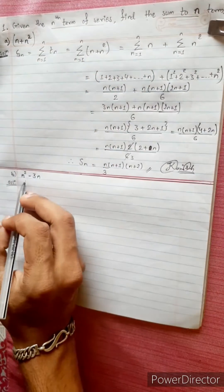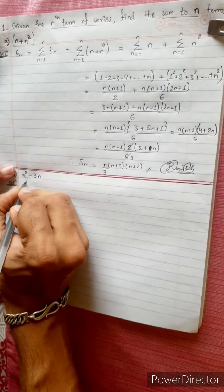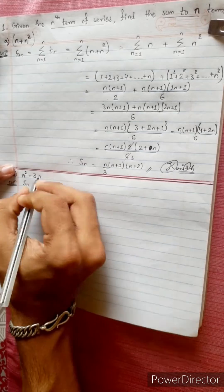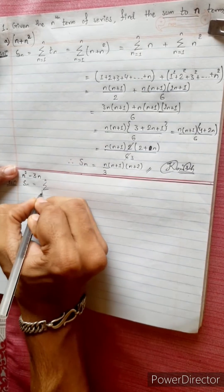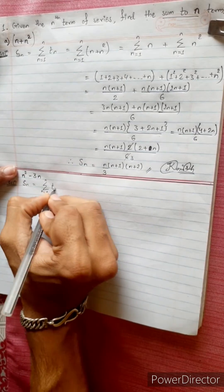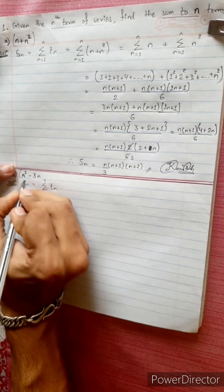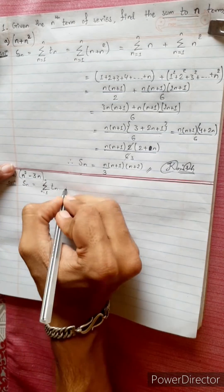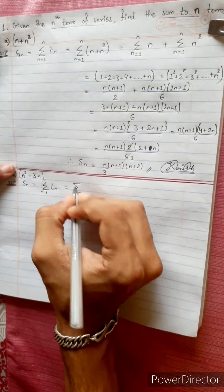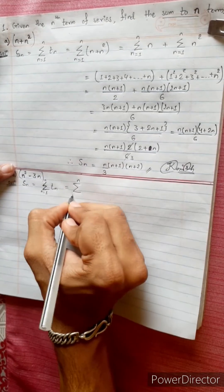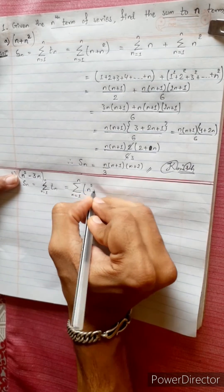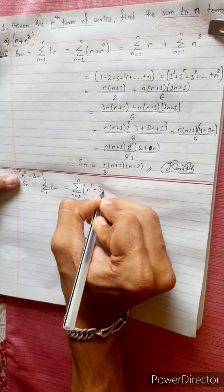Find the sum to n terms. Sₙ equals summation from n equals 1 to n of tₙ. Here tₙ equals n² minus 3n.